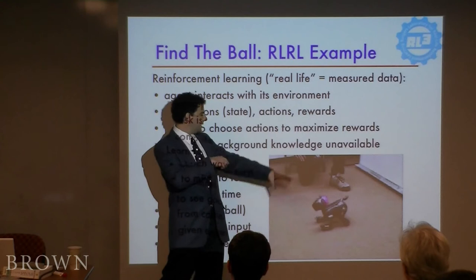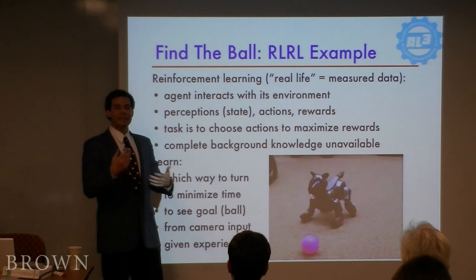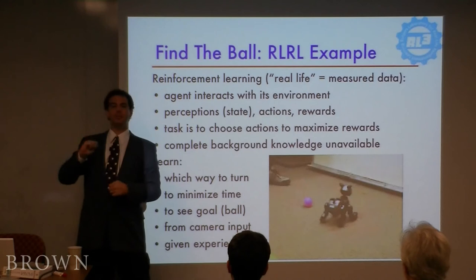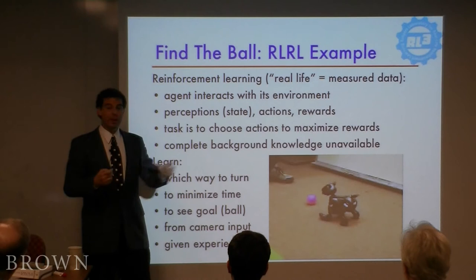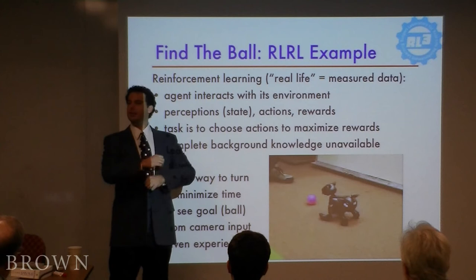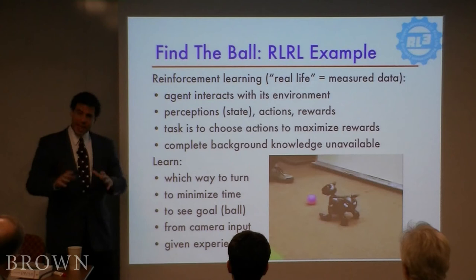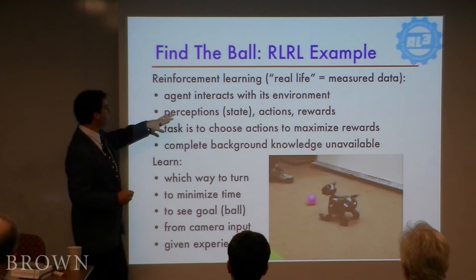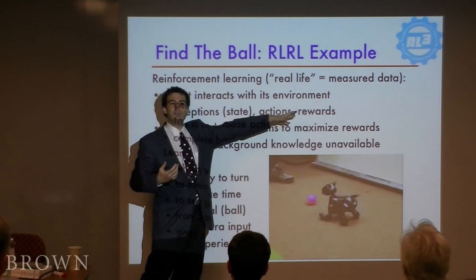What it has to learn over time is: when I see these kinds of colors, is this the kind of situation where I should go left, or where I should go right? It gets a plus one reward when it sees the pink ball, and the question is what can it do to maximize its return — to get the most happiness per unit time? That in a nutshell has all the elements of the reinforcement learning problem: an agent interacting with its environment, perceptions, actions, and some measure of reward.